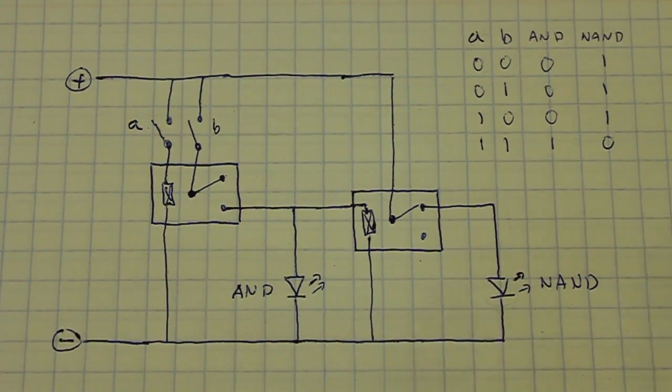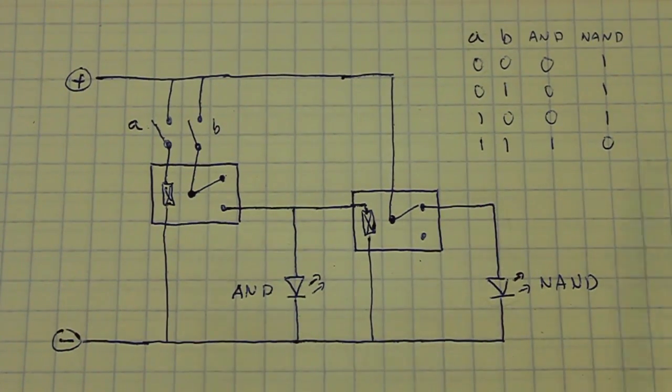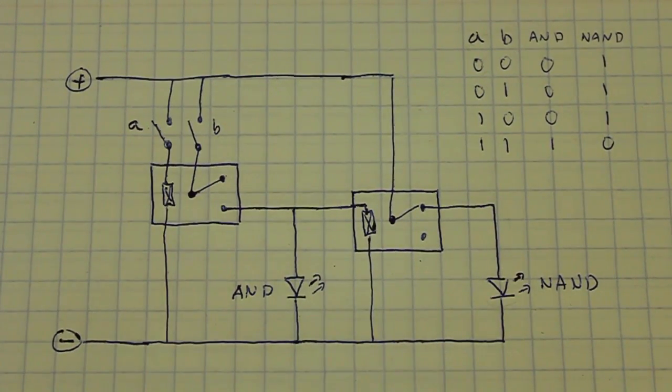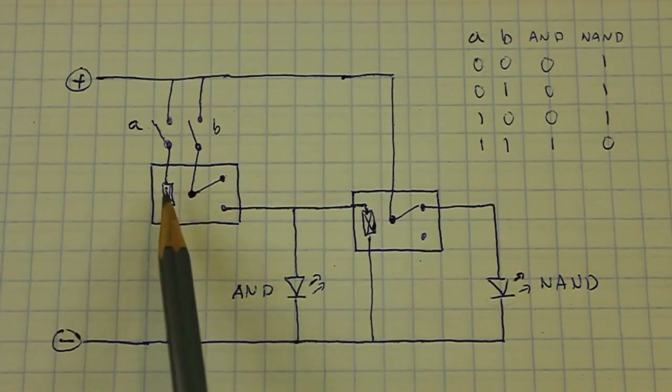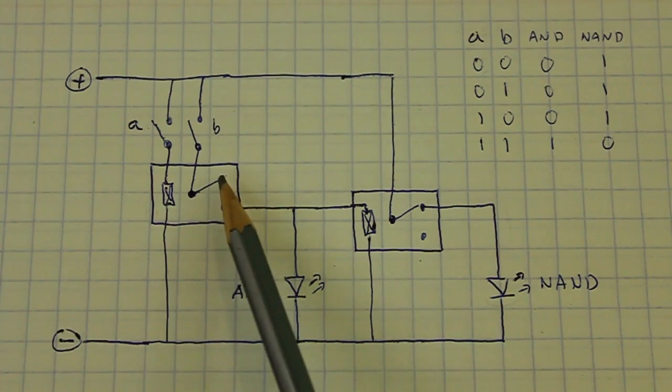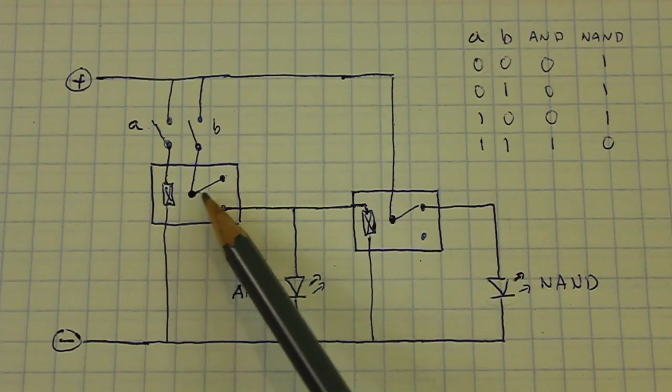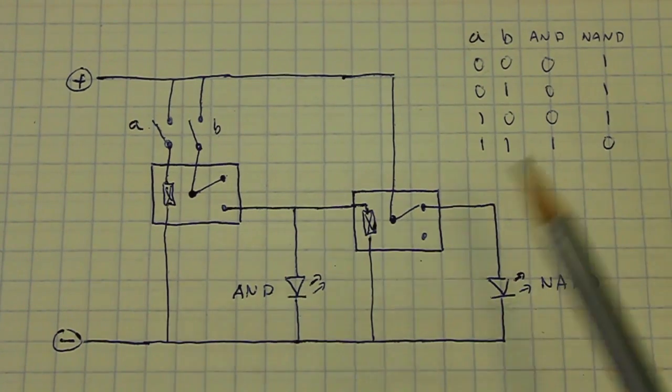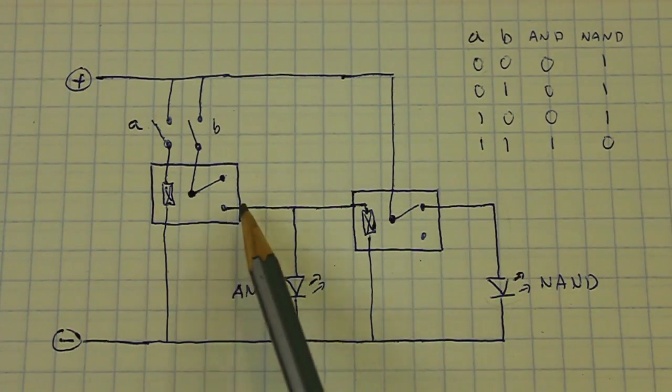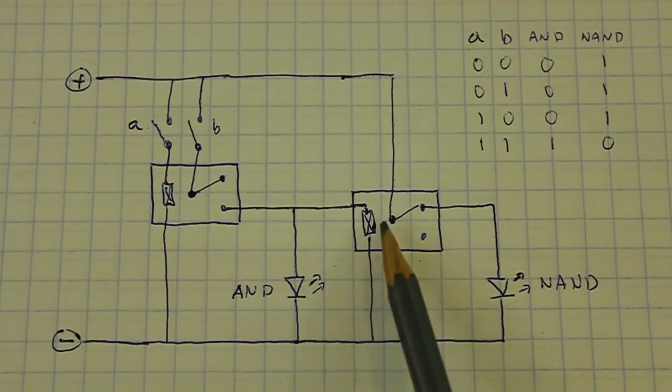The last case, when both switches are closed. Let's see. Close A, close B. The current flows through the coil. This switch moves to the other position. And the current now flows from here to here. And this LED is now ON. We have a 1.